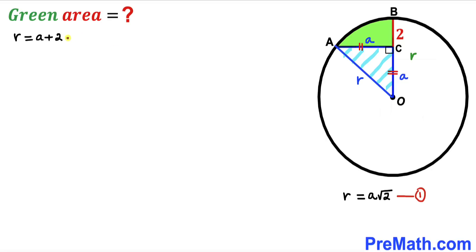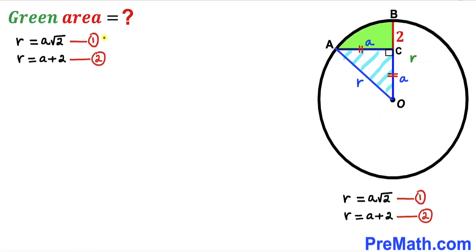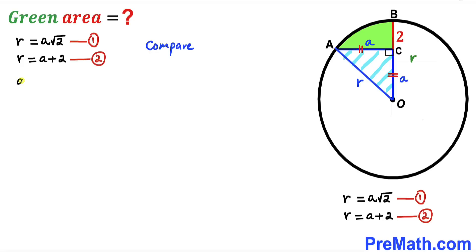We label r = a + 2 as Equation 2. Since Equations 1 and 2 both equal r, the left-hand sides are identical, so we equate the right-hand sides: a + 2 = a√2. Let's move a to the other side.